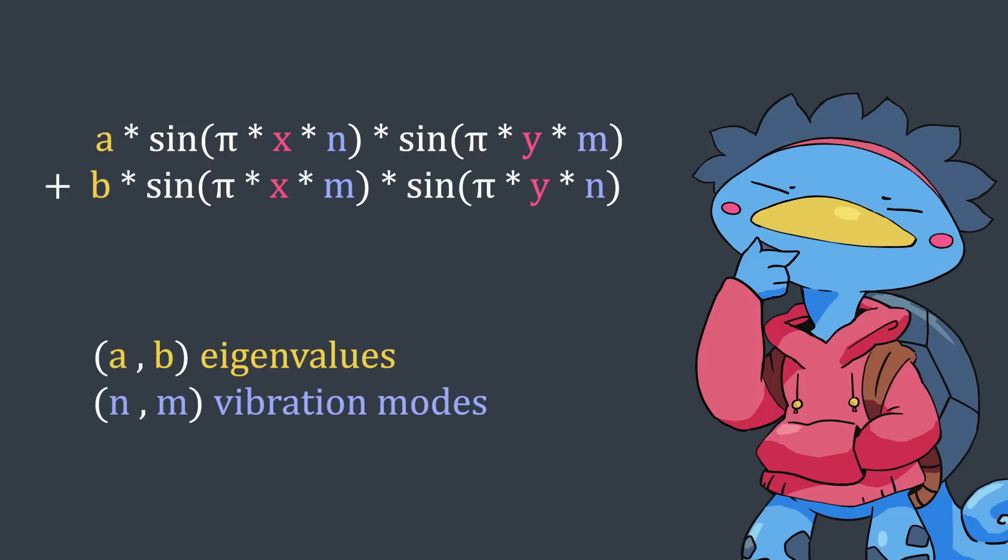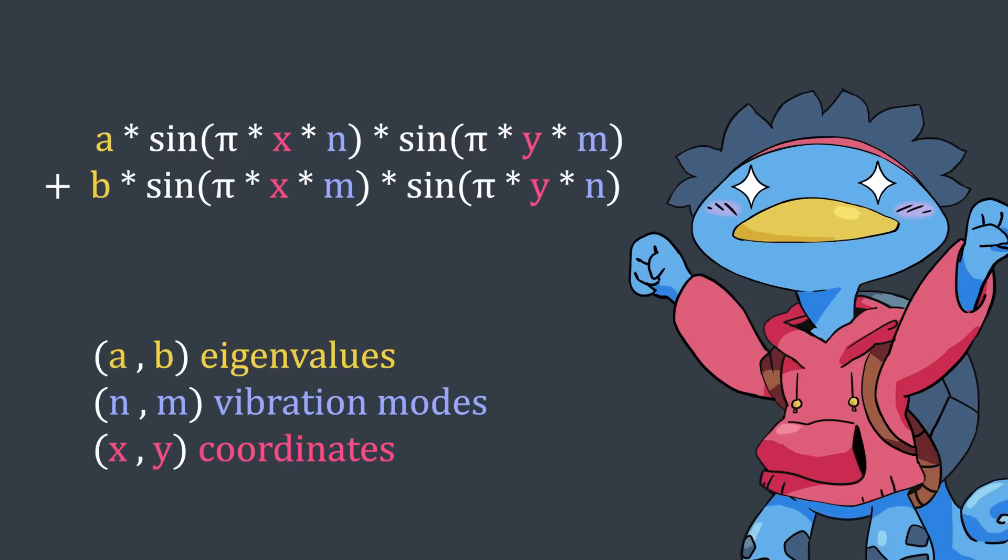N and M are integers representing modes of vibration. There's some math behind the physics of sound and harmonics that we may want to know about, but ultimately these two numbers are going to define what the patterns look like. X and Y are simply the coordinates of the current point on the plate, or in our case, the screen. Let's shader graph that!